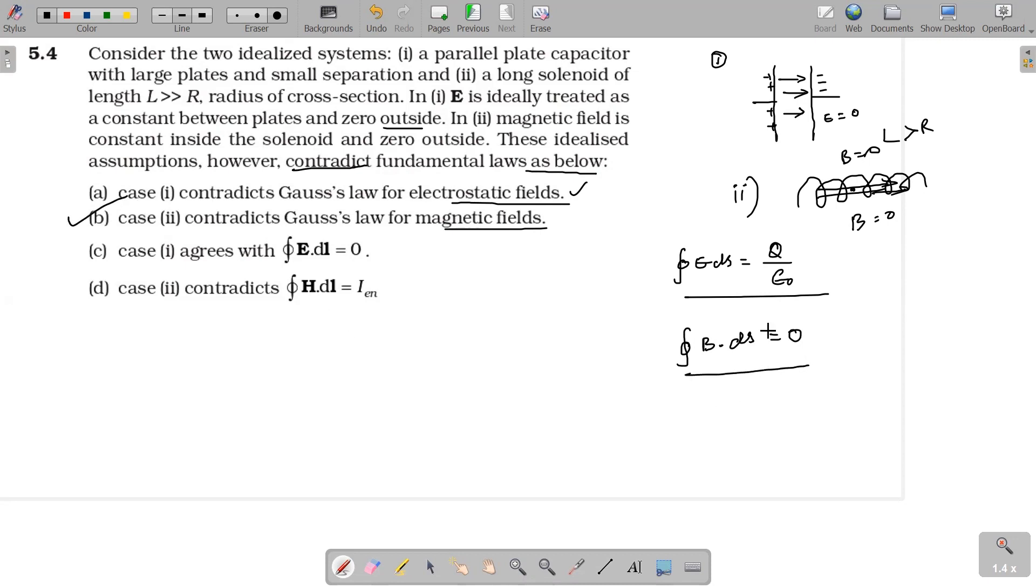Closed integral of B dot dS should give out magnetic field. This is the contradiction. This also agrees with integral E dot dl. Integral H dot dl is nothing but i enclosed, is also correct. So answer is B alone, which implies that number of magnetic lines entering the Gaussian surface is equal to number of magnetic lines leaving. Therefore it is not possible. So in the first case, field is constant inside and zero outside.